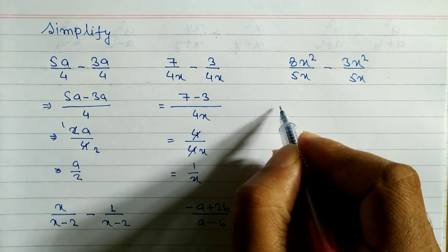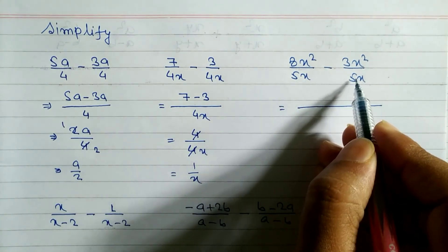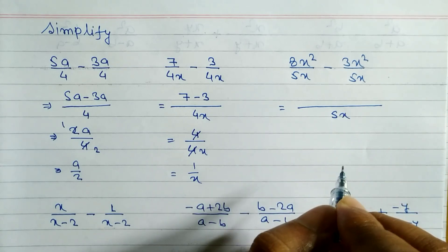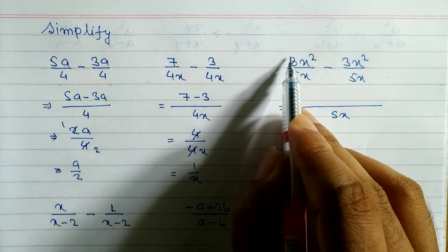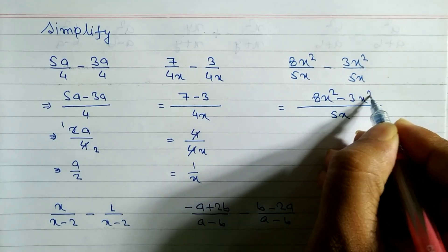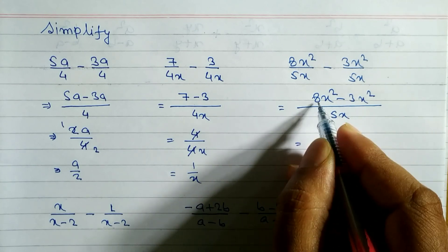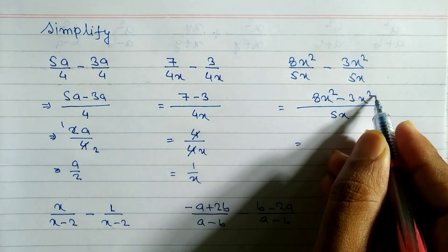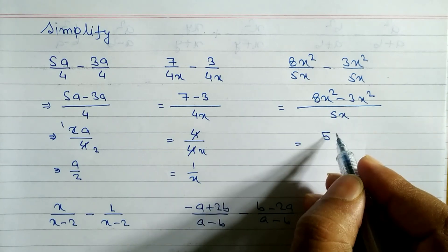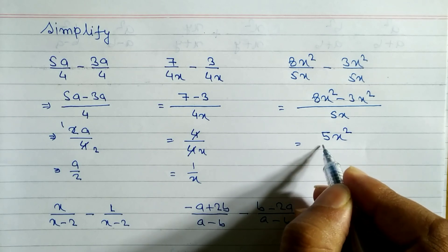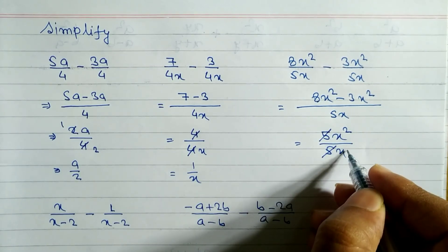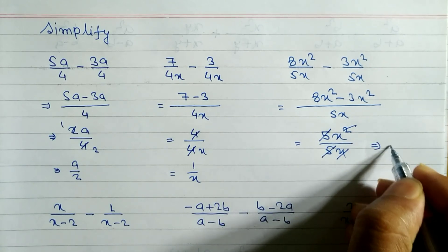Similarly look at here. Again you can see the denominator is the same: 5x and 5x, so it's easy to simplify. The LCM is 5x. When denominators are same, just write down the numerator. So we write 8x square minus 3x square. When you subtract these two like terms, 8 minus 3 is 5, and we write 5x square by 5x. 5 and 5 cancel, this x and x square cancel, so the remaining is x.